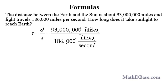Substituting the numbers into the formula, 93 million miles over 186,000 miles per second, we have 93 million divided by 186,000, or 500. The miles units cancel, leaving only seconds, and we have 500 seconds.